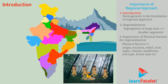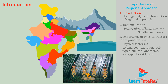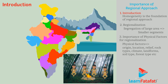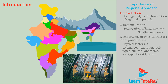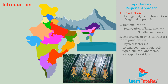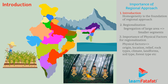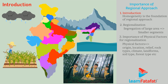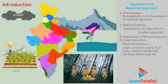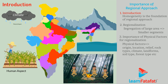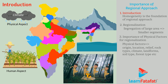Physical aspects look at the natural processes in the region. Human aspects look at the impact and behaviour of the people because of physical aspects. For example, cropping pattern depends on climate. Together, they provide unique characteristics to the region.